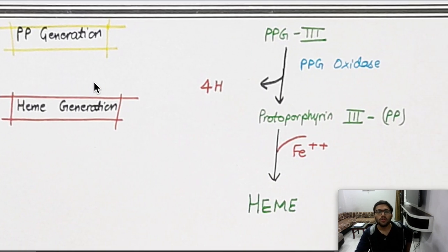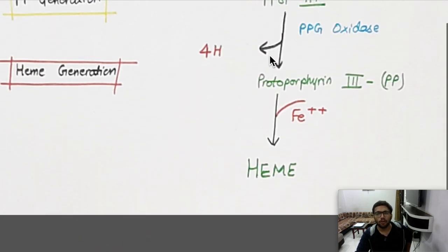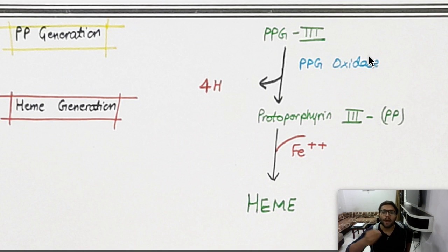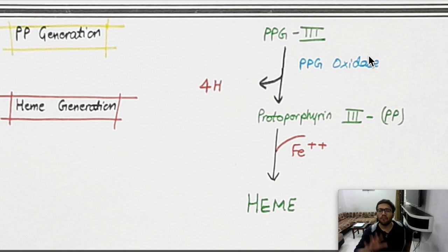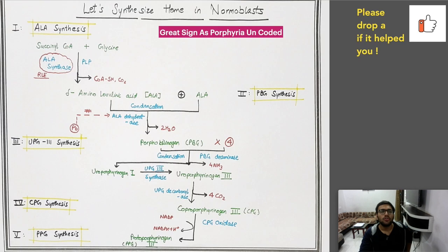Protoporphyrinogen type 3 is then oxidized again — remove four hydrogen atoms — forming protoporphyrin. Finally, iron (Fe) is added to protoporphyrin to form heme. You now have heme as the final product. When these intermediates accumulate due to enzyme defects, we get the porphyria disorders.